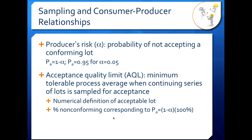The producer's risk goes along with the acceptance quality limit, or AQL. The AQL is the minimum tolerable process average when you have a continuing series of lots sampled for acceptance — so you have lot 1 sampled, then 2, then 3, and so on. The AQL is the numerical definition of your acceptable lot. The percentage nonconforming at your AQL corresponds to a percent acceptance of (1 − alpha) × 100%. So you would read over from the 95% line if your alpha is 0.05 and then down to the percent nonconforming to get your AQL.